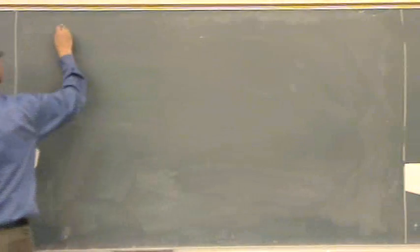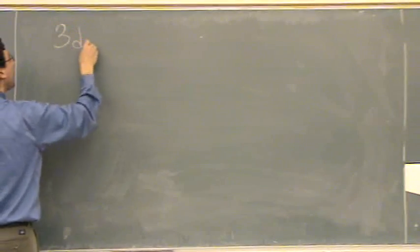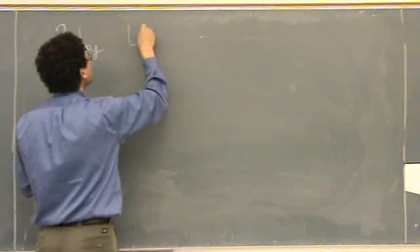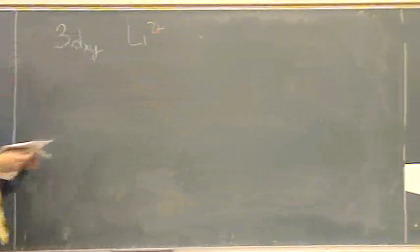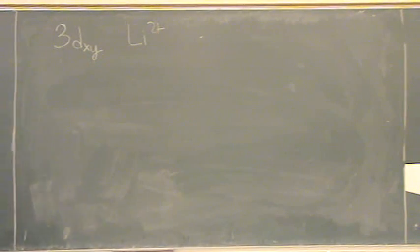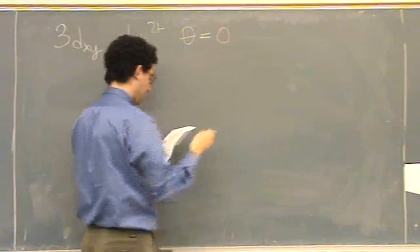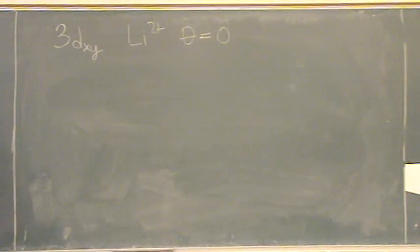Okay, so we have a 3dxy orbital wave function for a lithium 2 plus ion, and theta equals 0. What is the value of the wave function?